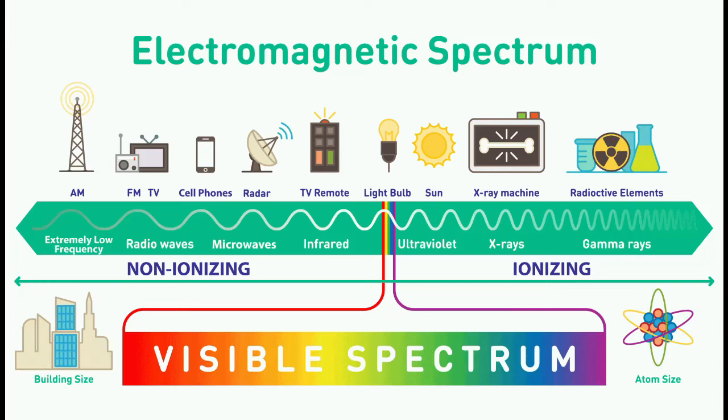Radiation is energy transmitted in waves or a stream of particles. Different types of radiation are used in a diverse range of industrial, medical, research and communications applications. Some can create harmful exposures that must be effectively controlled.